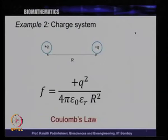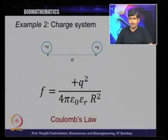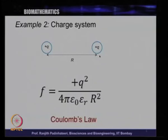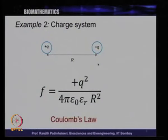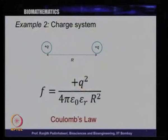Now let us go to our next case — charges. As we said, if we learn about springs and charges, we learn a lot about biological systems. Let us take the simplest case: two charges +q and -q at a distance r apart. The force is given by Coulomb's law: F = q²/(4πε₀εᵣr²), where ε₀ and εᵣ are the permittivity of vacuum and the relative permittivity.